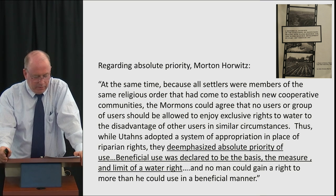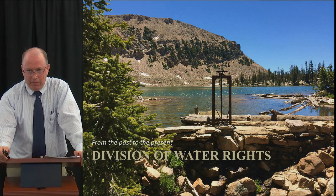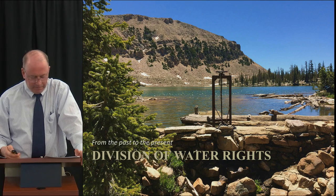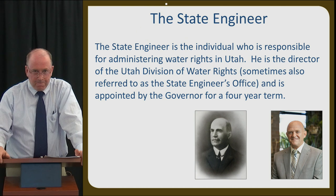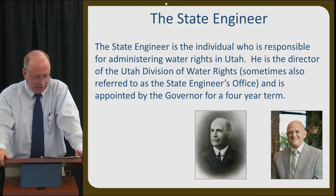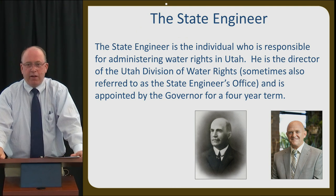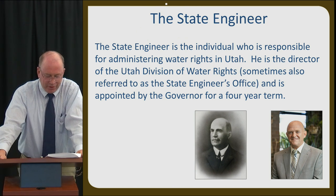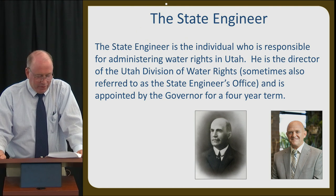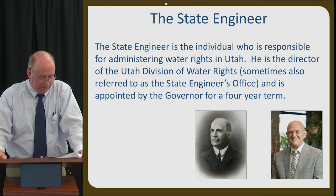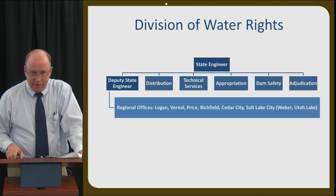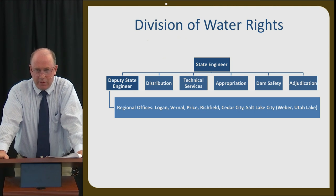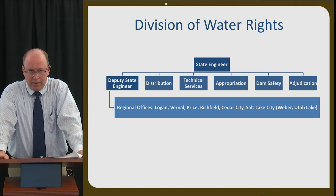With that historical background, we'll now fast forward to the present and how the Division of Water Rights administers water rights — through the State Engineer and the State Engineer's Office, which is the Division of Water Rights. Willard Young was the first State Engineer and his initial duties were to aid in planning, design, and construction of water storage and conveyance facilities. Kent Jones is our current State Engineer, who you met this morning, and Director of the Division of Water Rights. Here is a simplified division organization chart showing the State Engineer, Deputy State Engineer, and Assistant State Engineers over different areas.